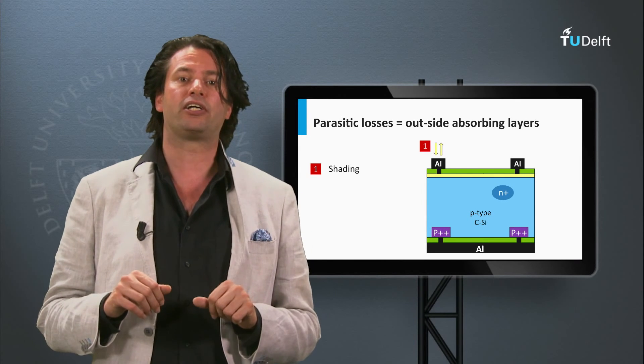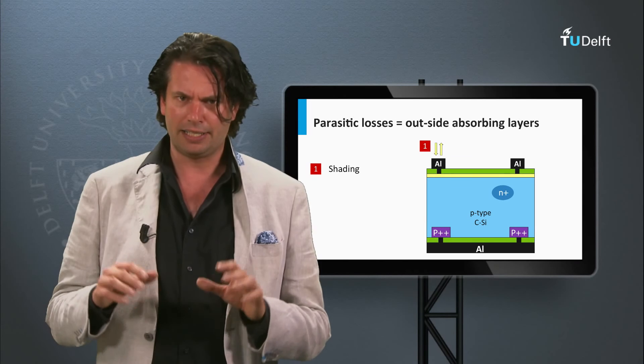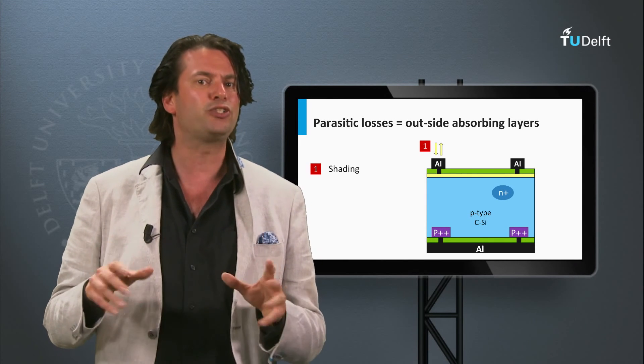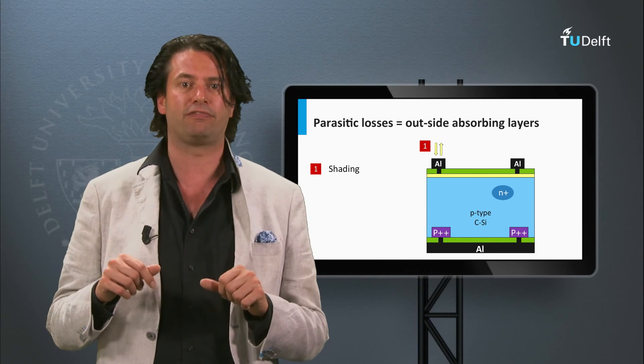First we consider the metal contacts. These contacts shade a certain area, preventing light to be absorbed in the PV active layers.